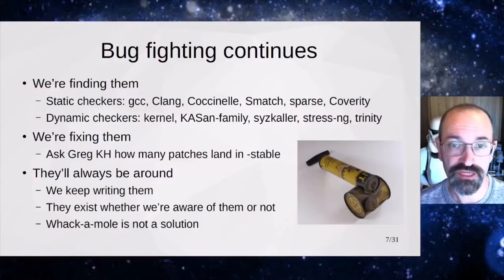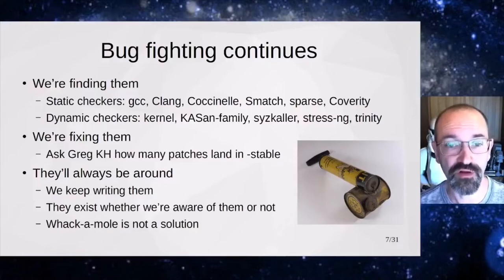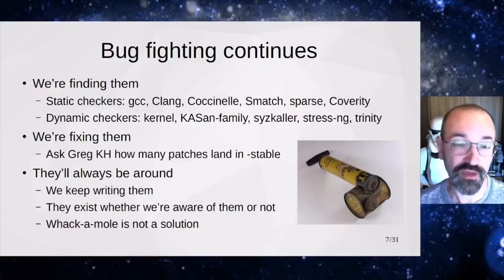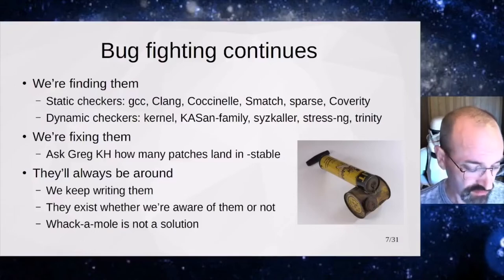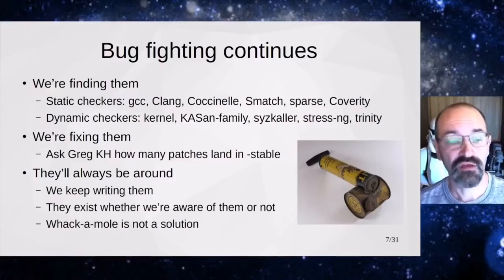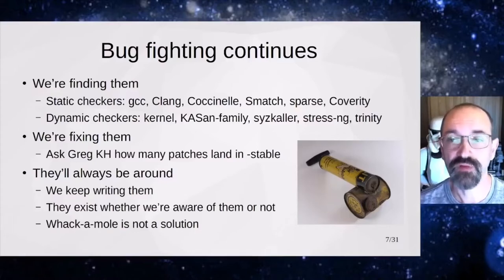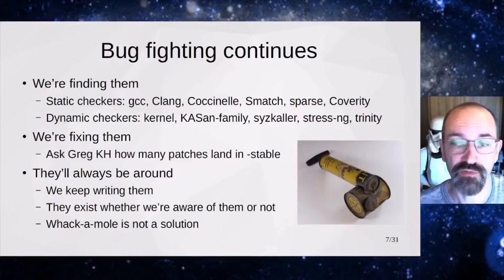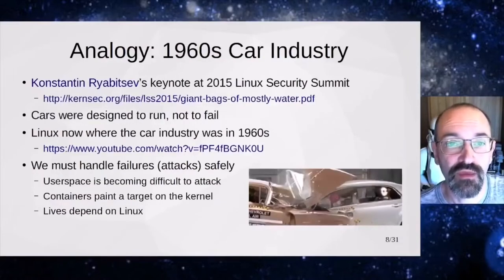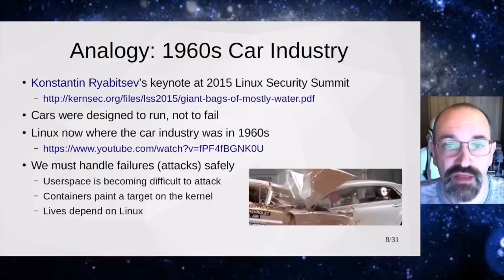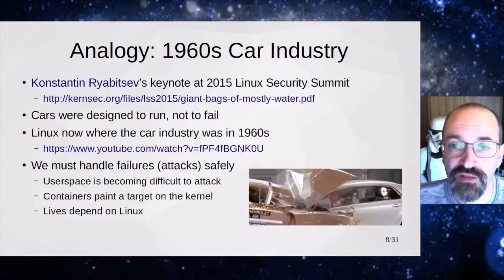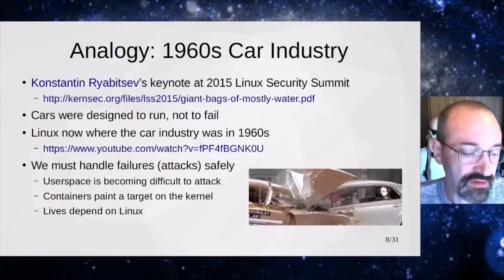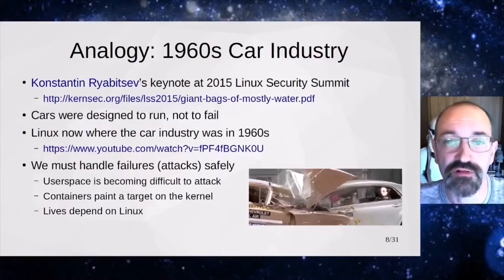As far as bugs go, we're just going to keep introducing them — the kernel is written in C and we're prone to get stuff wrong because the compilers can only help us so much. The thing to drive home is that the bugs in the kernel exist whether we know about them or not. They are there, they're waiting to be discovered, and they might be getting used already by attackers. Whack-a-mole on bugs is not a strategy.